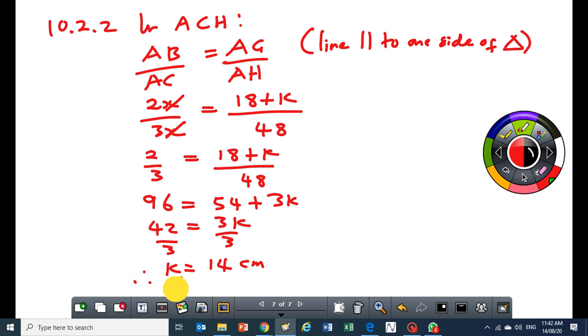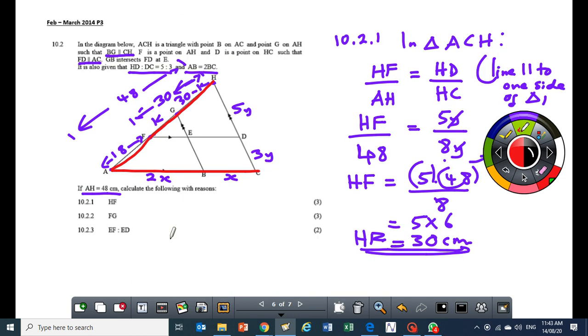Then I can say therefore FG is equal to 14 centimeters. So that's how you would approach the question. It's always wise to start from the proportion theory.